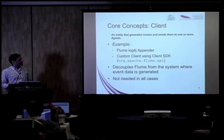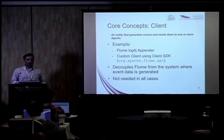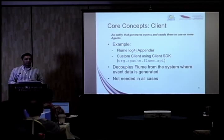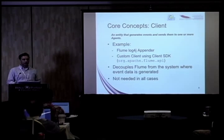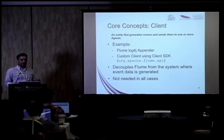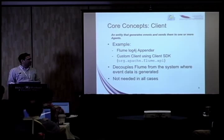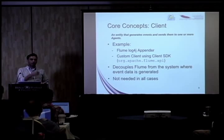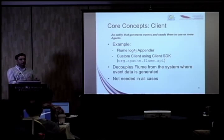All events start at the client — the client is the point of origination. In the case of hundreds of web servers or servers in your data center generating logs, you probably have a client on those nodes. The client would parse out the logs, extract the events, and start routing them — pumping them into the Flume pipelines. There are out-of-the-box clients including a Log4j appender, and a very simple API which runs with minimal configuration. You can write your own client using that API.